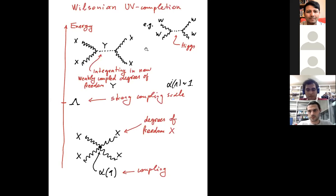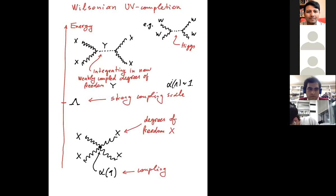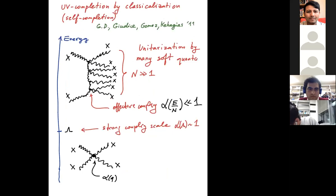A good example of Wilsonian UV completion is the Higgs in the Standard Model. Scattering of longitudinal W bosons becomes strongly interacting above a few hundred GeV. Integrating in the Higgs particle restores unitarity perturbatively. This is the standard approach in Wilsonian theories.